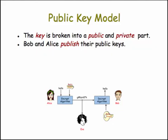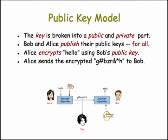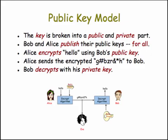Bob and Alice publish their public keys, and that's the big difference between RSA and Diffie-Hellman. They publish them so that all people who want to encrypt messages to Bob can use Bob's public key — Alice and anyone else. Alice encrypts the word 'hello' using Bob's public key, sends the encrypted gibberish to Bob, who decrypts it with his private key.